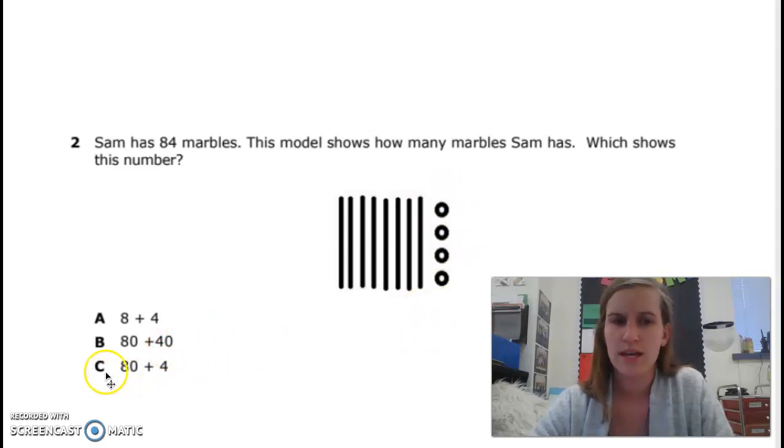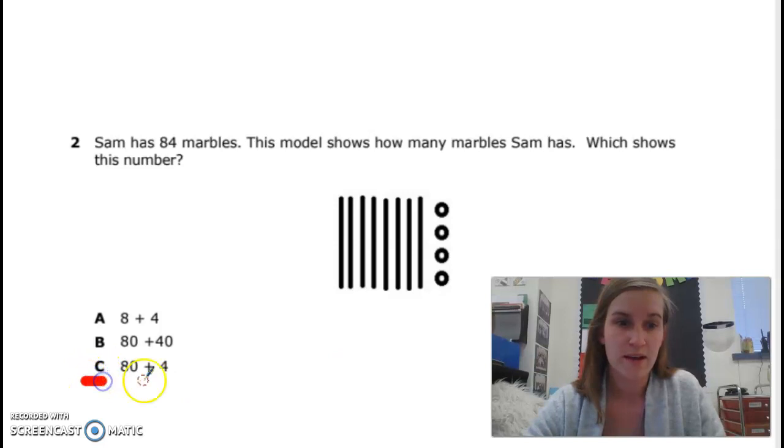C. 80 plus 4. 8 tens plus 4 extra ones. 84. So C is showing the correct way because 8 tens is 80, 4 ones is 4. Add them together and that's 84.